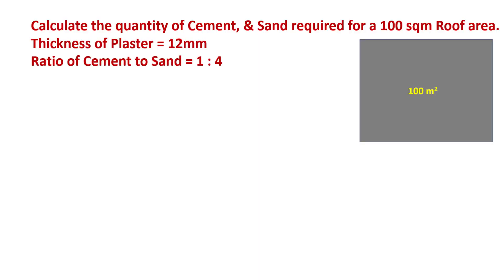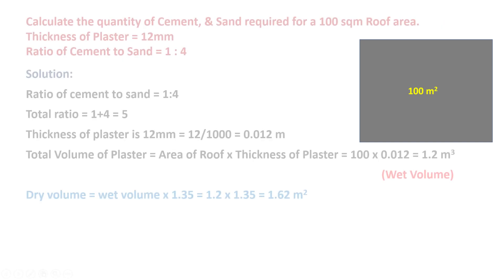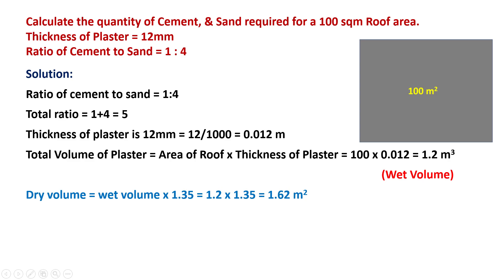Let's take an example of a 100 square meter roof area that needs to be plastered with a thickness of 12 mm. The ratio of cement to sand is assumed to be 1 to 4. Once you have this information, you can use the following steps to calculate the quantity of cement and sand required.